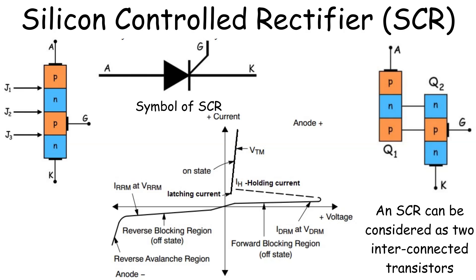Introduction to SCR. The silicon-controlled rectifier, or SCR, is essentially a type of thyristor, which has a four-layer semiconductor device with alternating layers of P-type and N-type materials. In this diagram, you can see the four layers, P-N-P-N.